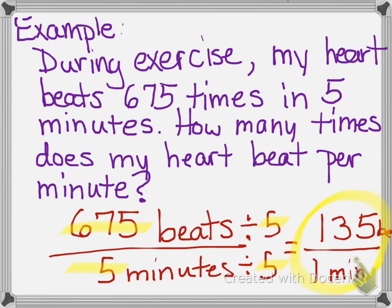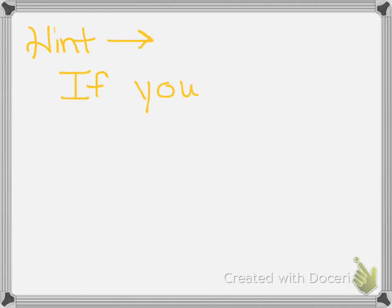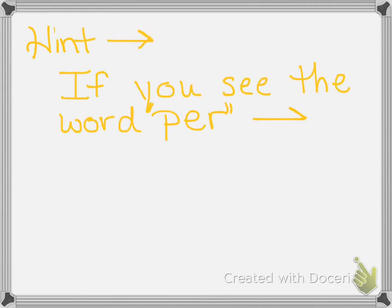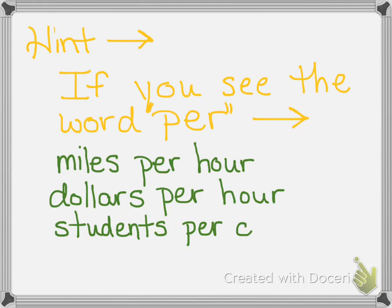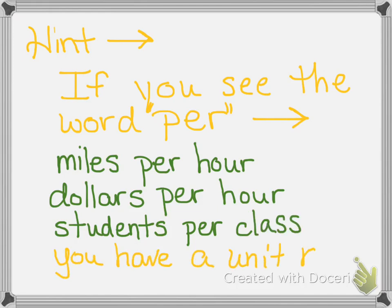Now let's let you try. But first, a hint: if you see the word 'per' — miles per hour, dollars per day, dollars per hour, students per class, students per teacher — you have a unit rate. Anytime you see that word 'per,' that's a hint that you're talking about the unit rate.